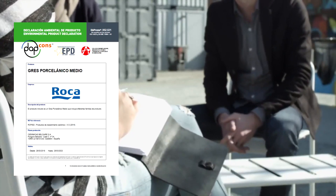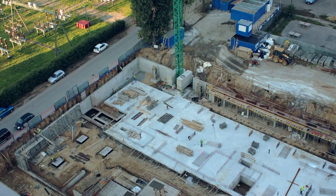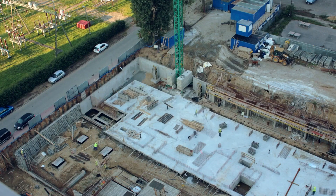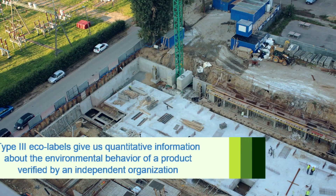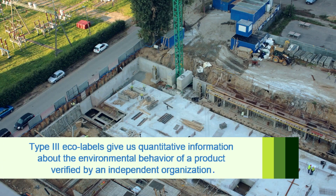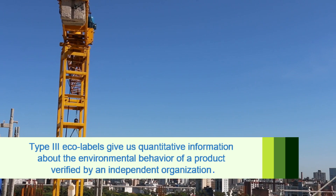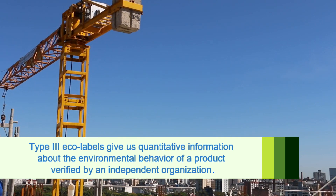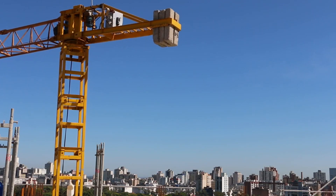Thanks to DAPCOMS, the stakeholders involved in the construction and rehabilitation of buildings, such as the prescribers of materials, may have the necessary information to choose materials and products based on environmental criteria. With these type 3 ecolabels, companies can demonstrate their involvement and respect for the environment, giving information to technicians when choosing more respectful products and adopting sustainable measures within the sector.